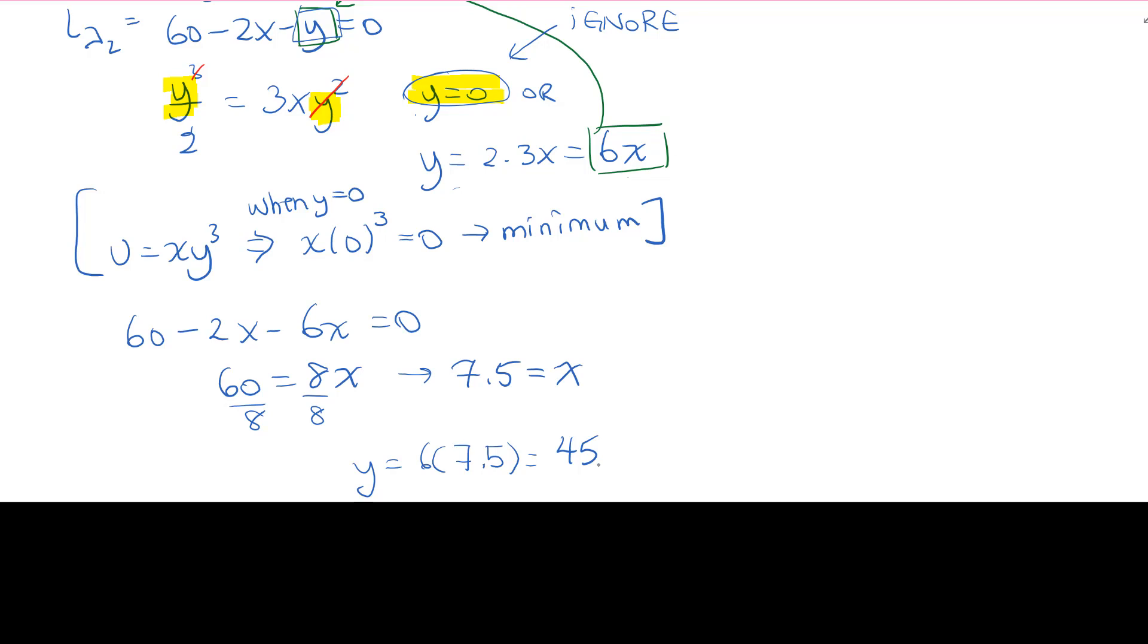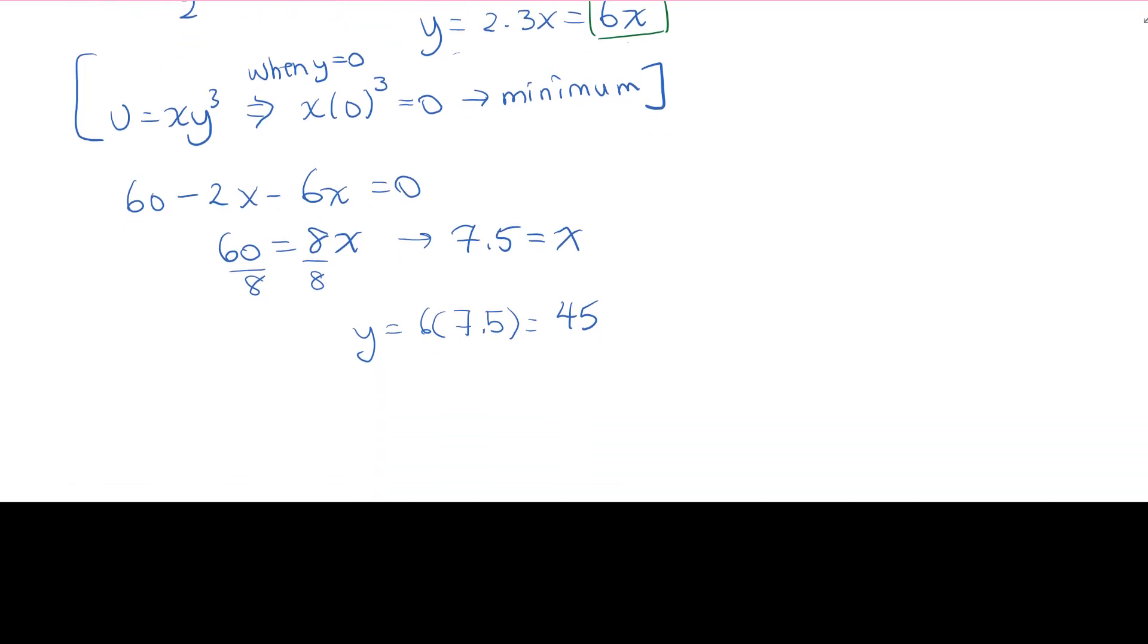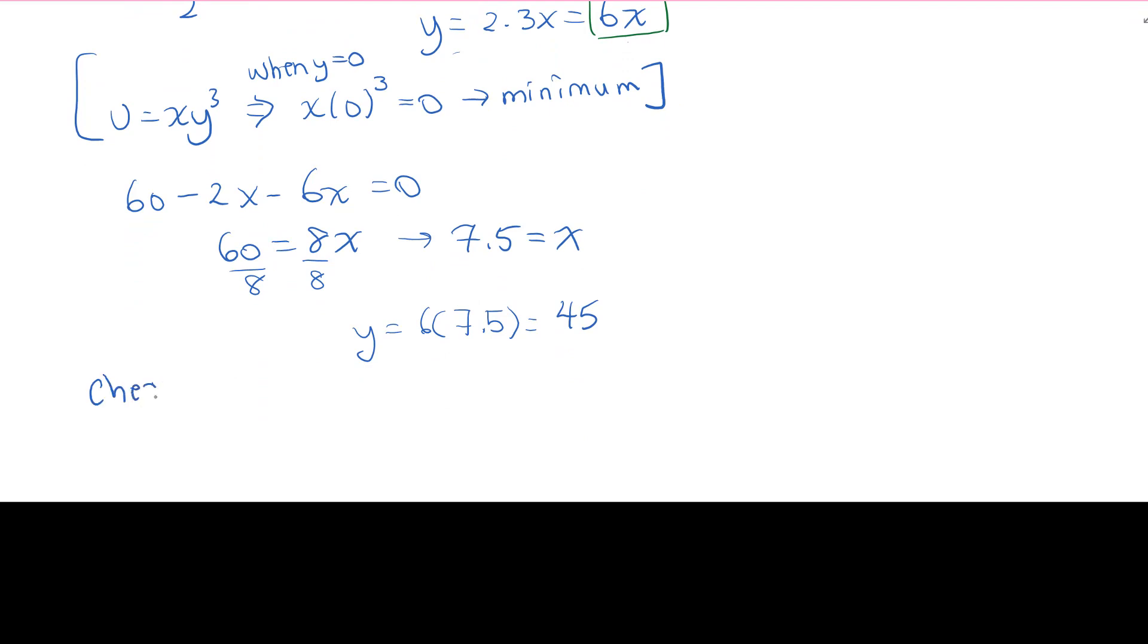So now what we need to go do. We originally, in step number 2, assumed that constraint number 1 was satisfied, meaning we would not run out of money. We worried about running out of coupons. We didn't worry about running out of money. Now let's go double check that.